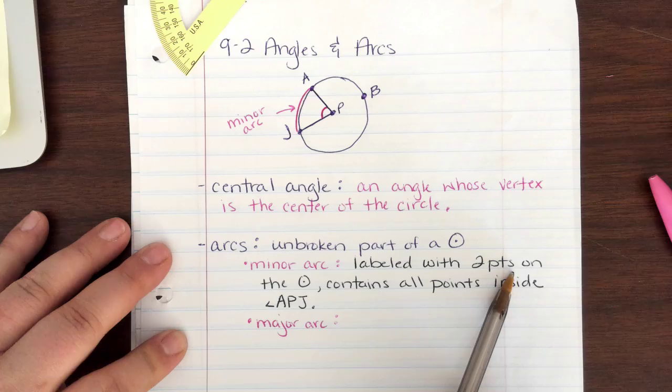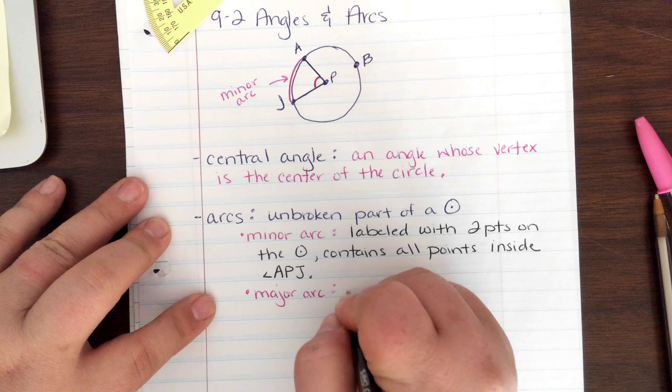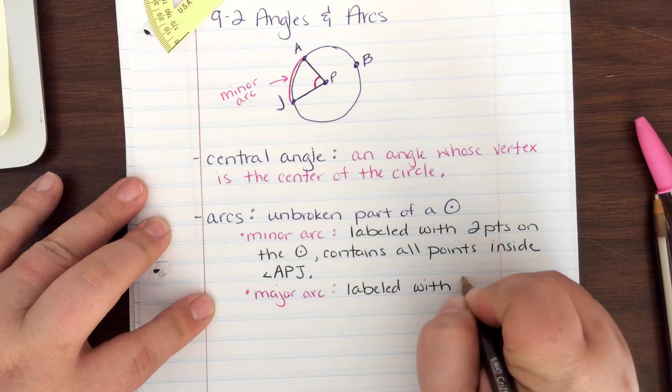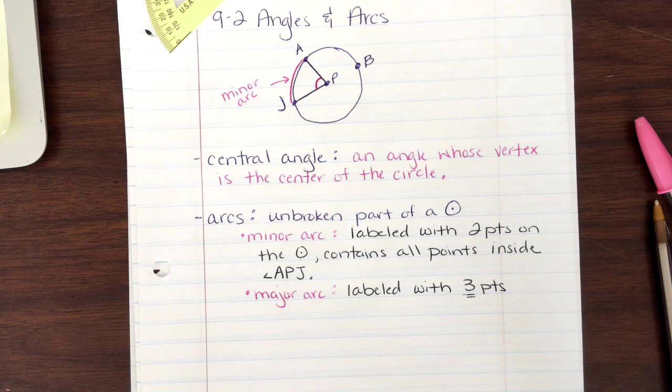I wrote down minor arcs are labeled with two points. Two points on the circle. Major, major arcs are labeled with three points. Three points. It must be three points. If you are talking about two points, it can be mistaken for a minor arc. Labeled with three points on the circle.